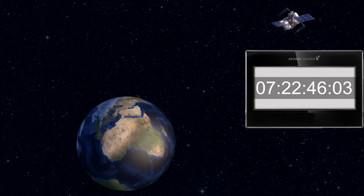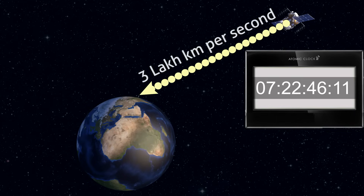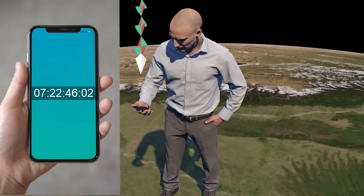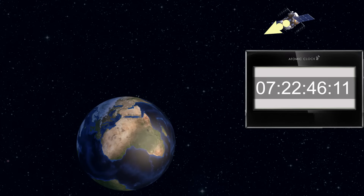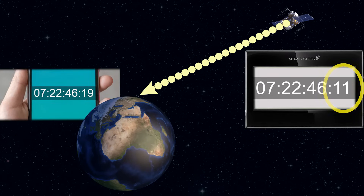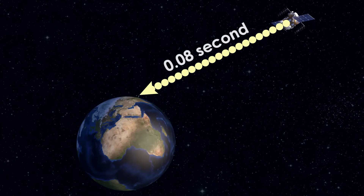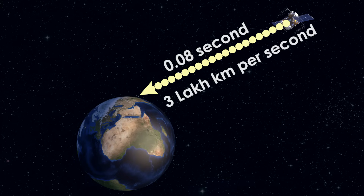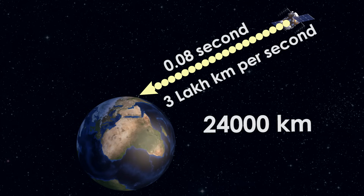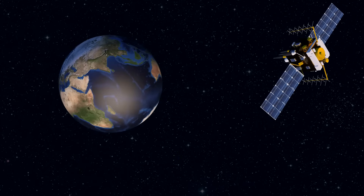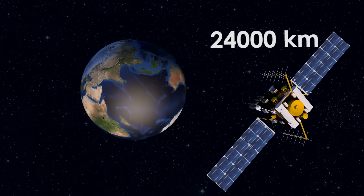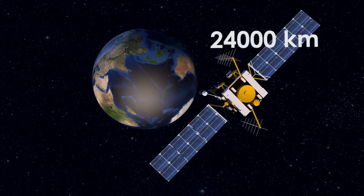I know the time at which the data was sent and the speed at which it travels. I look at the time on my clock when I receive the data and compare this with the time at which the data was sent, and I can easily find the time it took for the data to travel from the satellite to me. Let's say it took 0.08 seconds to reach from this satellite. I know that in one second it travels 300,000 km, so in 0.08 seconds it would have travelled 24,000 km. That means I am 24,000 km away from this particular satellite, but still I do not know where I am.